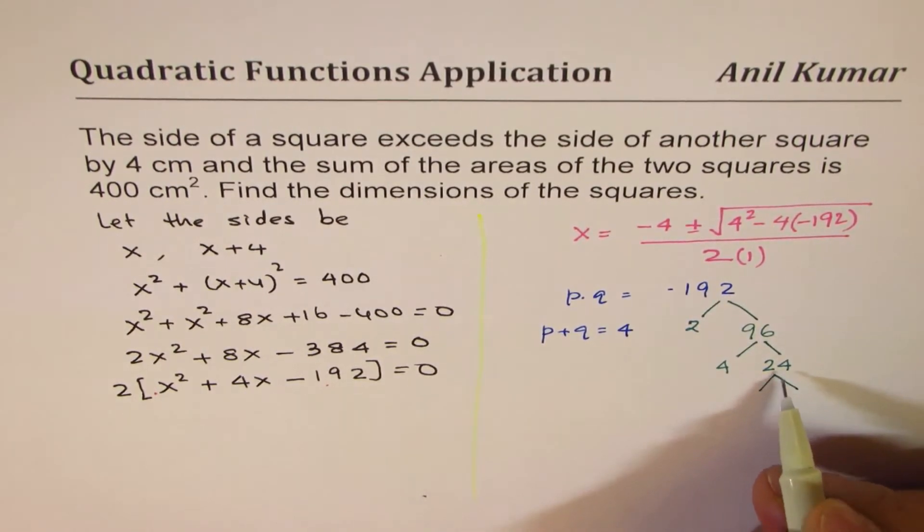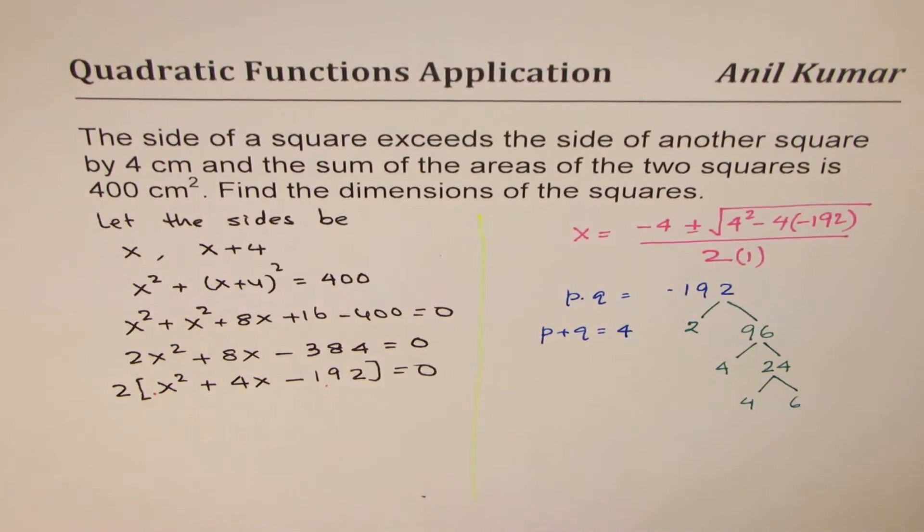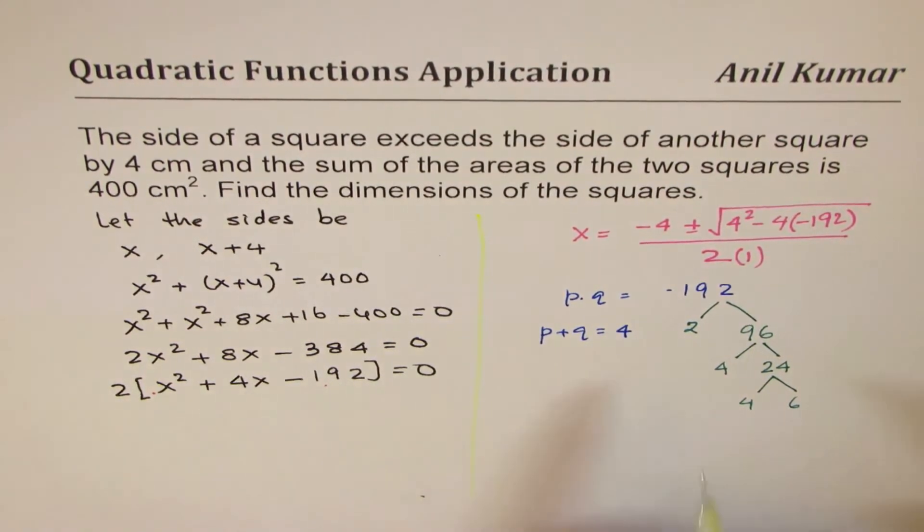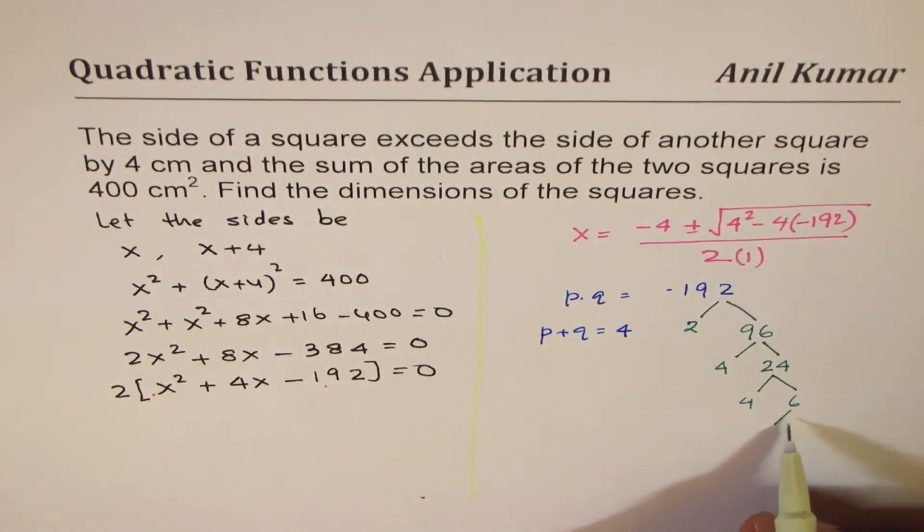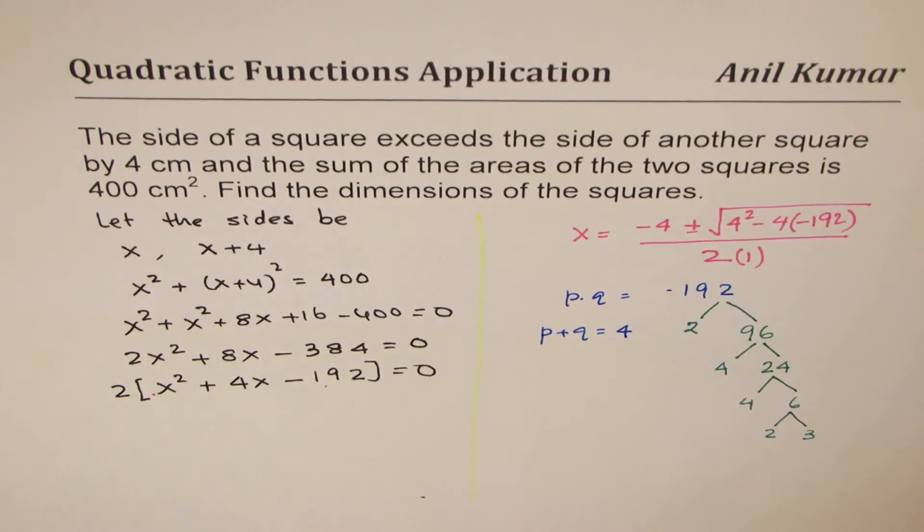Then we say this could be divided further by 4 times 6 and so on. So we have all the set of numbers to work with. These numbers help us to find possible factors.